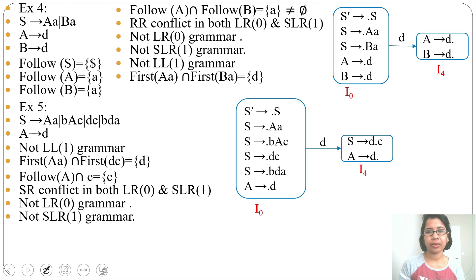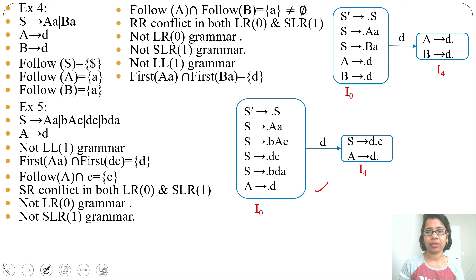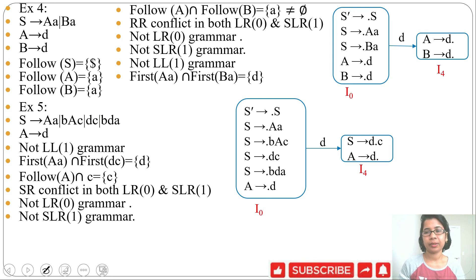We found there is a shift-reduce conflict in both LR0 and SLR1, so this grammar is not LR0 and not SLR1. Rather than constructing the full parsing table, just from the automata you can check whether conflict is present or not. If this lecture is helpful please like and subscribe — thank you.